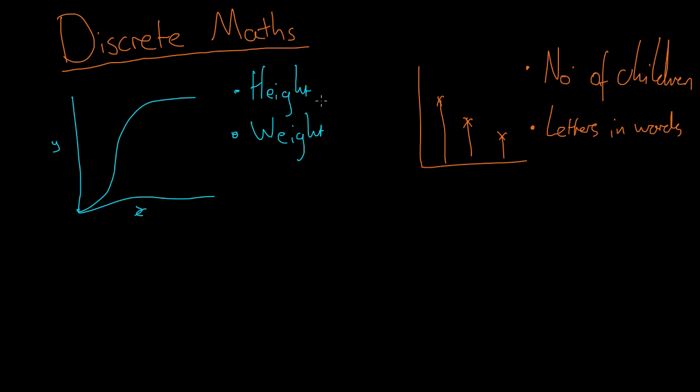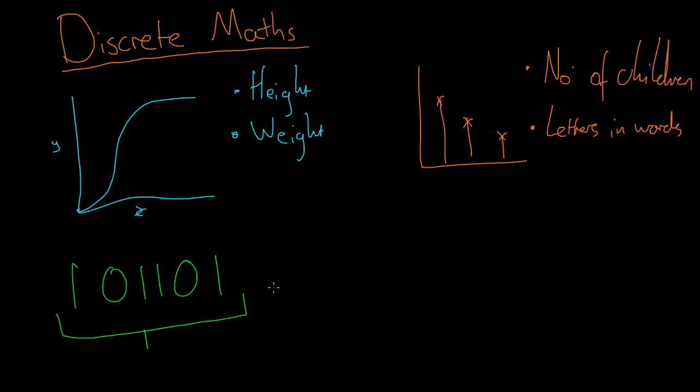So why do computers only use discrete maths? Binary. Binary is the way computers work. It's just on or off values. And that means that computers can only hold a finite number of data. These bits, as we call them, can only be a certain length — a computer can only hold a certain amount of them.